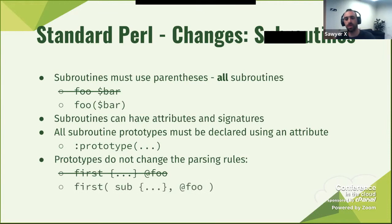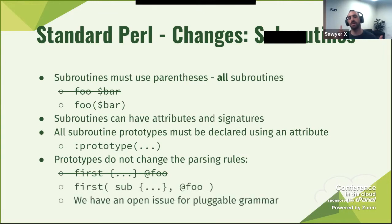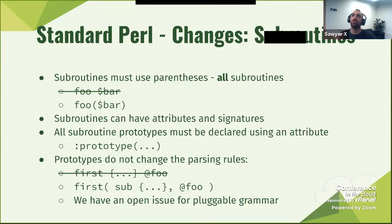Instead, we're going to write it using attributes. I do want to say, however, if you're thinking of things like Mojo, Dancer, Moose — they have, in a sense, their own grammar. So we have an open issue: we're working on introducing pluggable grammars, so you could say 'I want this to be Perl, but I also want to use the Moose grammar so it can understand that these are Moose keywords and how they behave.'